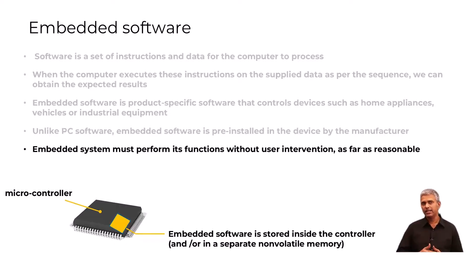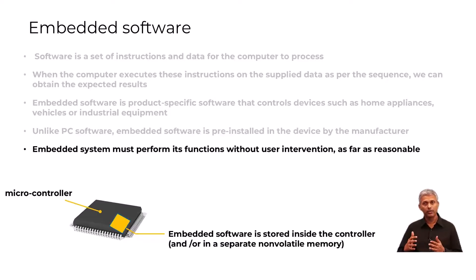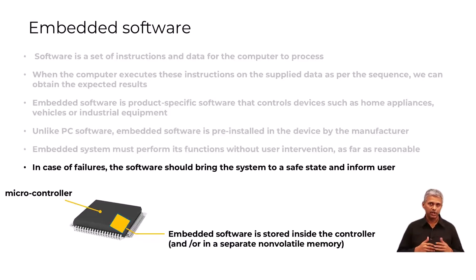Embedded software is designed to ensure the correct functionality of the system under various conditions of operation. The embedded software monitors user interaction with the system, its environment and operational conditions, as well as the failure conditions of the hardware, such that the system can be brought down to a safe state and the user is informed of the current situation.